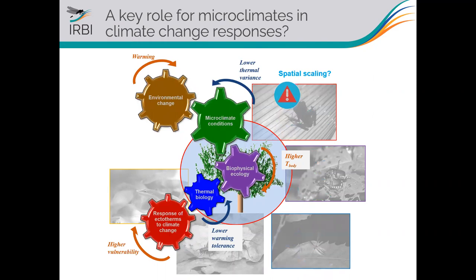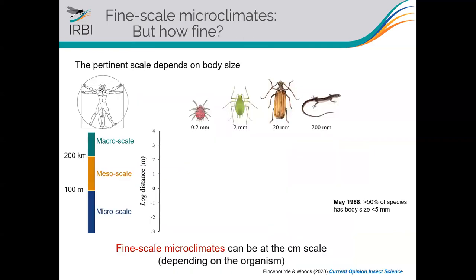There is one problem when we start to apply this framework: spatial scaling. At which spatial scale do we need to work? One way to think about this, especially for insects that can be really small — or arthropods more broadly, we also have spider mites — is to apply a very simple framework. The idea is that humans have decided the limits between micro and mesoscale is about 100 meters.